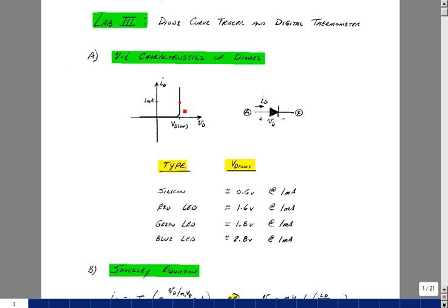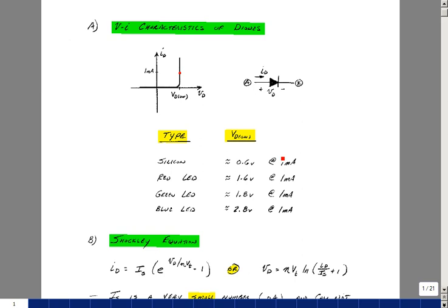If you plot the voltage from anode to cathode of a diode versus the current through it from anode to cathode, you get an exponential curve. Because there is a slight slope to this curve, you can talk about the turn-on voltage at a particular value of current.